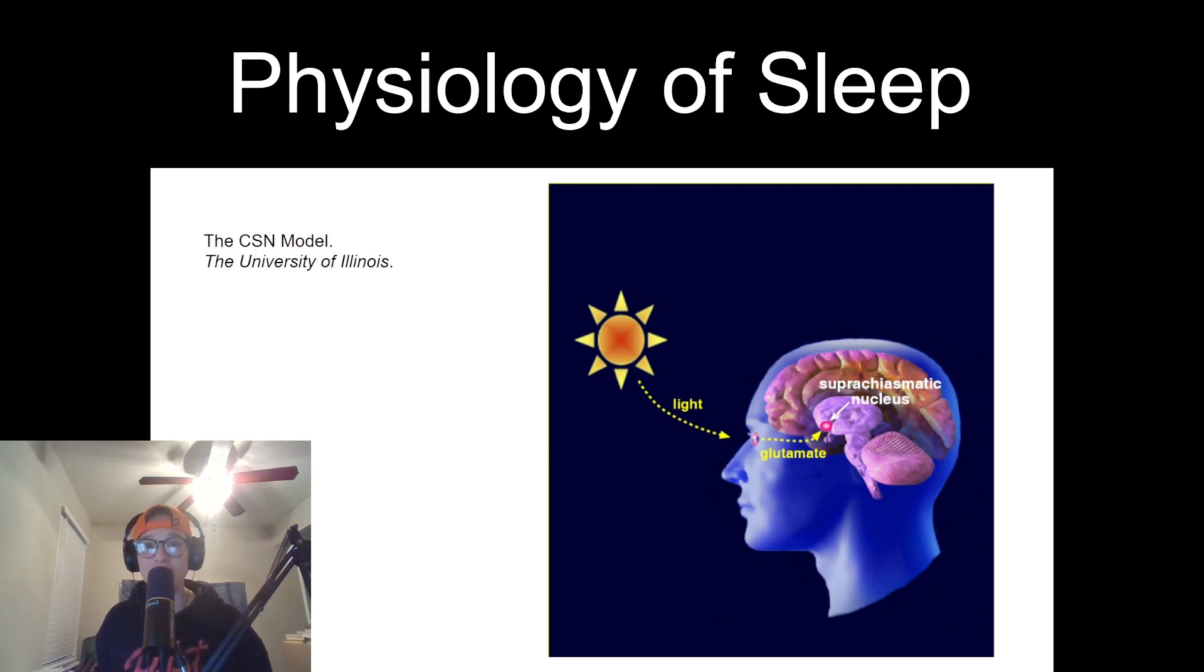The sleep-wake cycle is regulated by a complex network of structures in the brain. The suprachiasmatic nucleus, as shown in the diagram here, a small structure located in the hypothalamus, serves as the master circadian pacemaker. It receives input from light-sensitive cells in the retina, enabling it to synchronize our internal clocks with the 24-hour light-dark cycle.